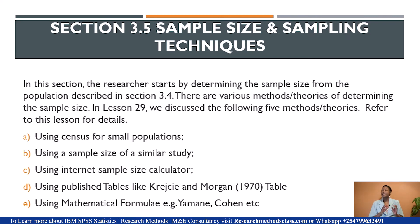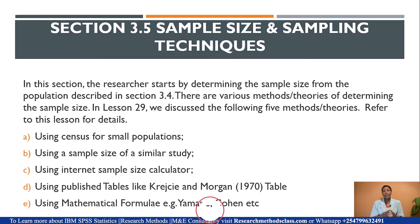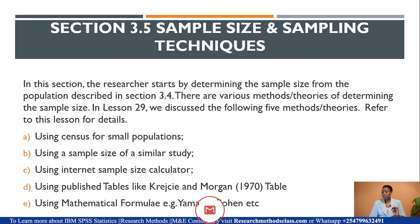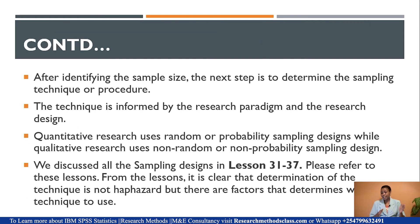As a researcher, it is advisable to restrict yourself to the last three methods: using an internet sample size calculator, because those calculators are based on the right level of precision and level of confidence; use of tables, especially the Krejcie and Morgan table; or calculation using the Yamane formula, Cohen, or any other formulae that helps determine the sample size. Once the sample size is identified, the next step is to determine the sampling procedure or the sampling technique.